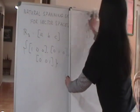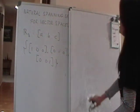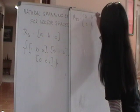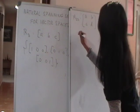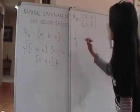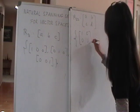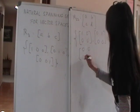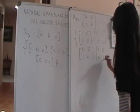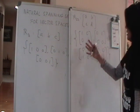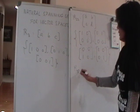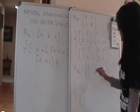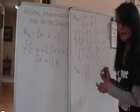For the space M₂₂ of 2×2 matrices, elements look like [a b; c d], so the natural spanning set consists of the four matrices: [1 0; 0 0], [0 1; 0 0], [0 0; 1 0], [0 0; 0 1] — you just move the 1 to each position. If you extend to M₃₂, the spanning set will have six such matrices — one for each entry in a 3×2 matrix.